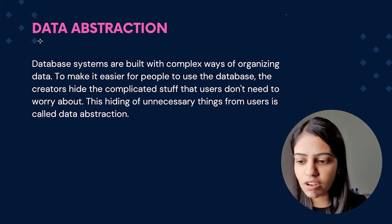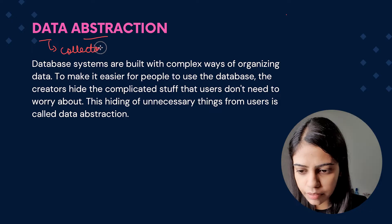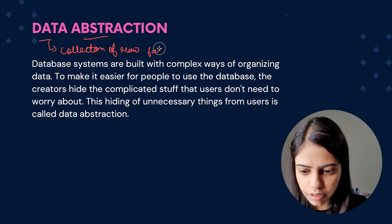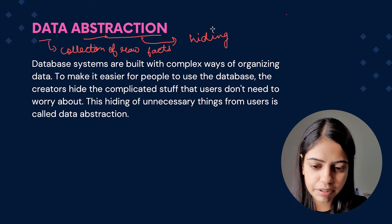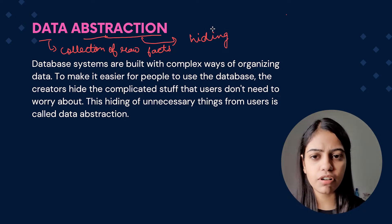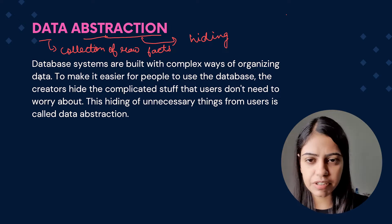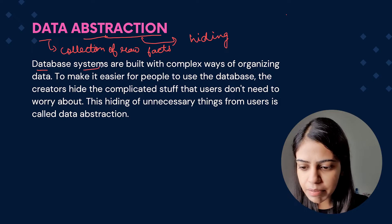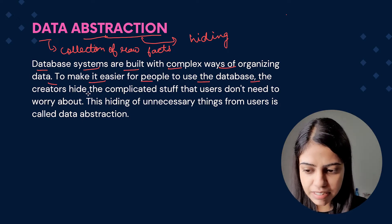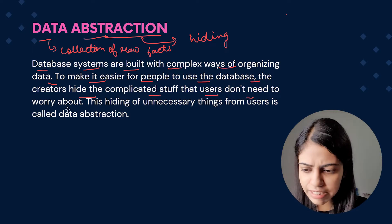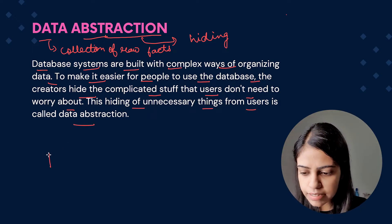So data abstraction is made up of two words: data and abstraction. Data is basically a collection of raw facts, and abstraction in simpler terms means hiding something. Whenever we are hiding some internal information or internal details which a user doesn't need to know, it is called data abstraction. Database systems are built in complex ways, but the creators hide the complicated stuff that users don't need to worry about — this hiding of unnecessary things from the user is called data abstraction.